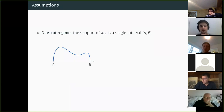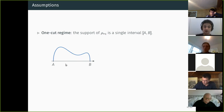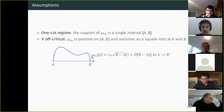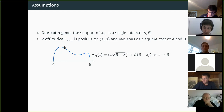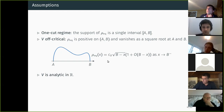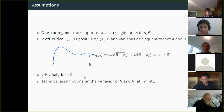Our assumptions are that everything looks like the Gaussian beta ensembles: the support of the equilibrium measure is a single interval [a, b], and V behaves like a square root near the edge — exactly as the semicircle distribution — which means the potential is off-critical. We also assume V is analytic and we need some control on the behavior of V and V' at infinity.